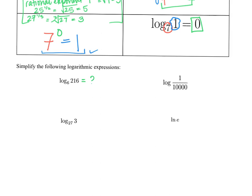Log is asking us for the exponent. So this is saying: 6 to what power makes 216? You could use your calculator or break it up — 6 times what makes 216? That's 36, and 36 is 6 times 6. So it takes three 6s multiplied together to make 216. Therefore 6 to the 3rd power is 216, and the answer to this logarithm is 3.